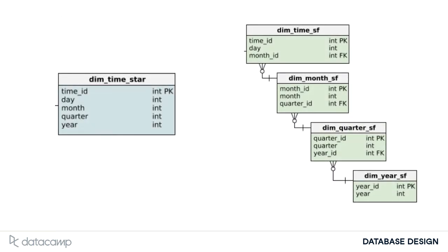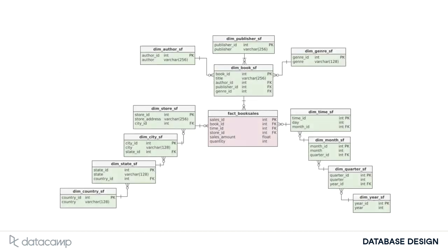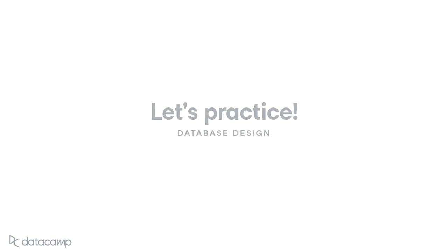The same is done on the time dimension. A day is part of a month, that is part of a quarter, and so on. And here we put all the normalized dimensions together to get the snowflake schema. Getting the hang of this? Let's work through some of this.